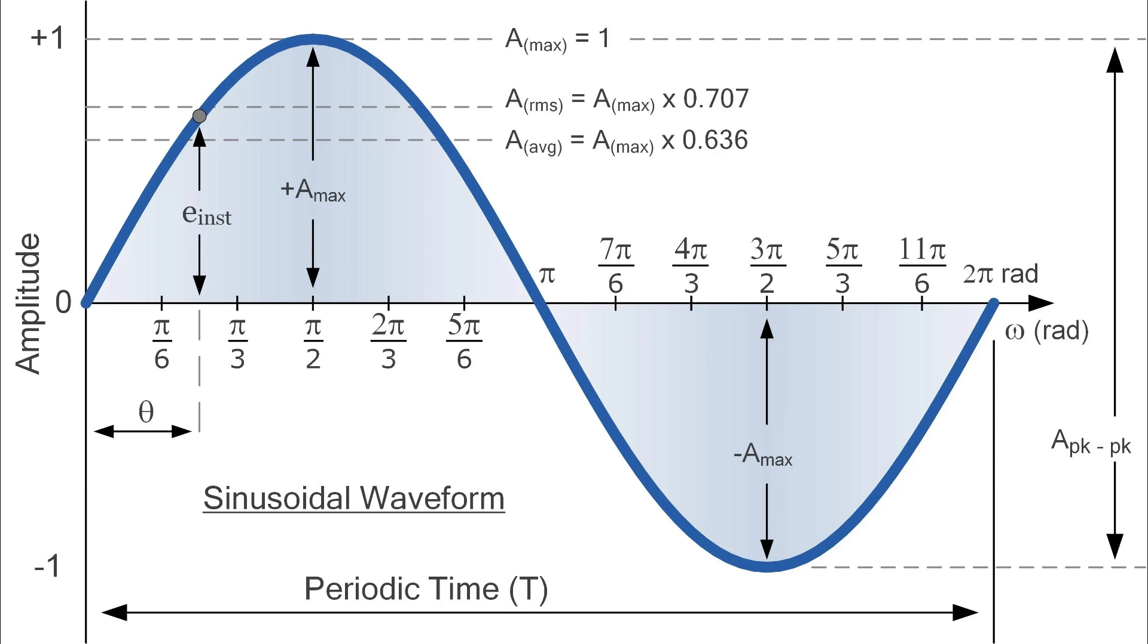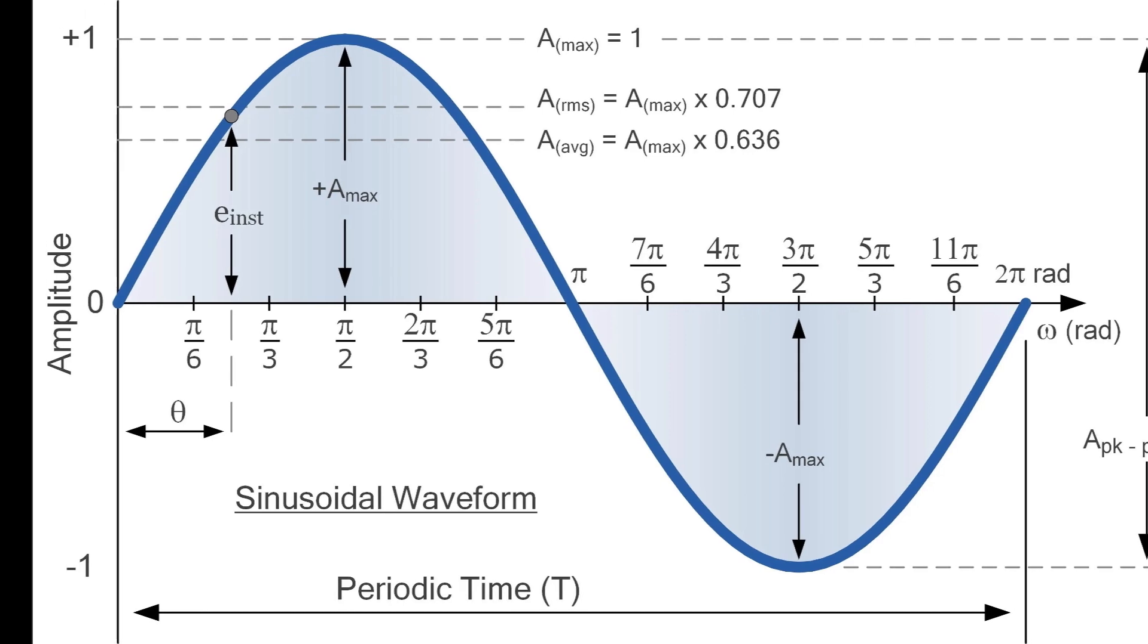If the waveform is not adequate, the electric motor may behave erratically, generating vibrations or even malfunctions. A clean, well-controlled sine wave prevents interference and allows the motor to work optimally. That is why the highest quality inverters are those capable of generating a signal as close as possible to the ideal wave.